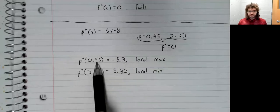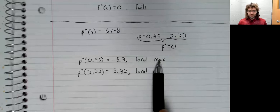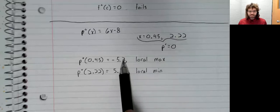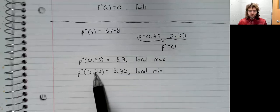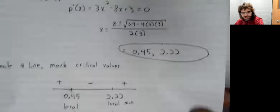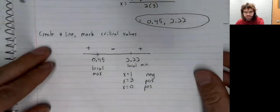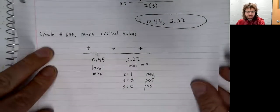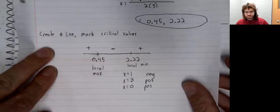We classify this as a local max because this is negative, this as a local min because this is positive. And of course, that's precisely what we got when we used the first derivative test.